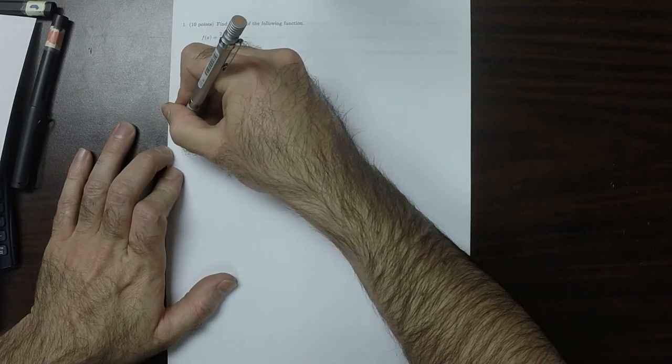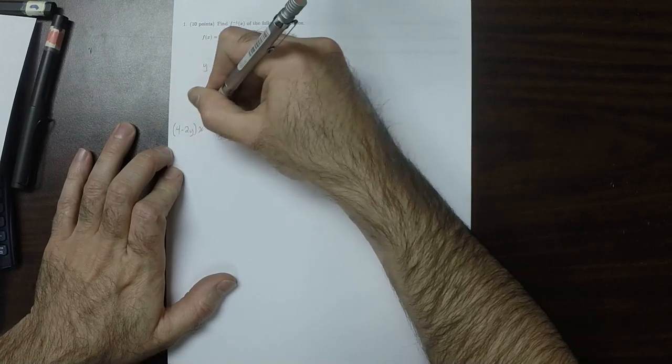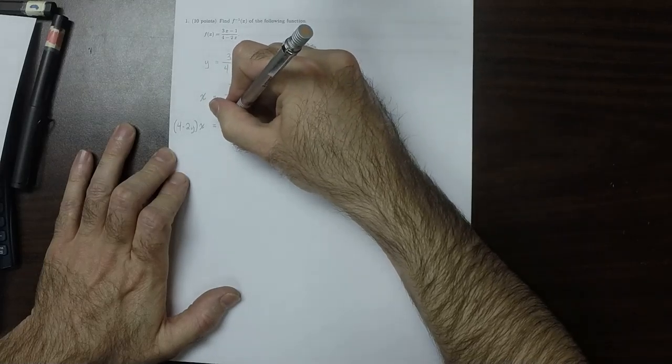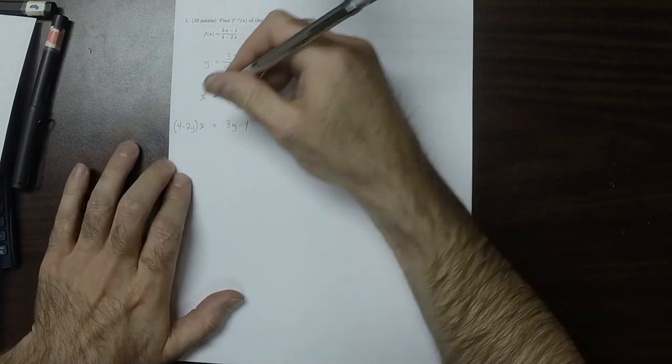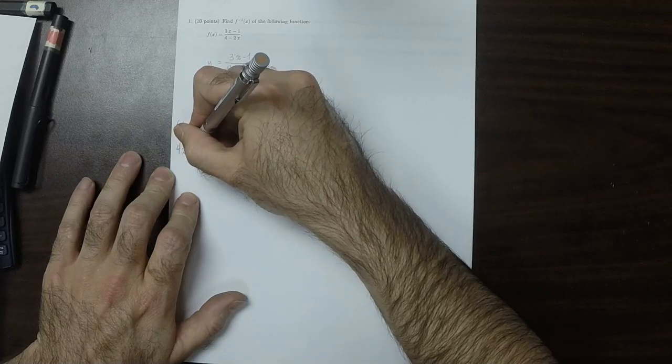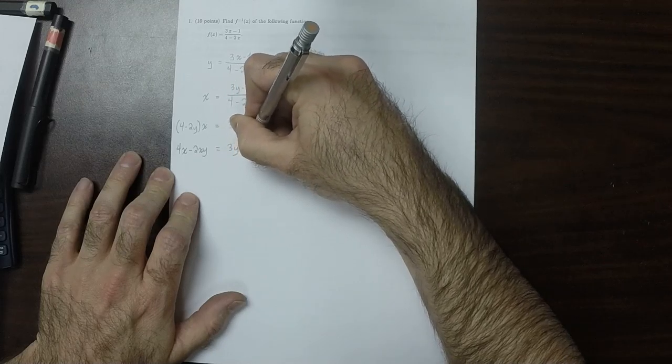Multiply both sides by the denominator of the fraction, 4 minus 2y. Now multiply out the left side. 4x minus 2xy equals 3y minus 1.